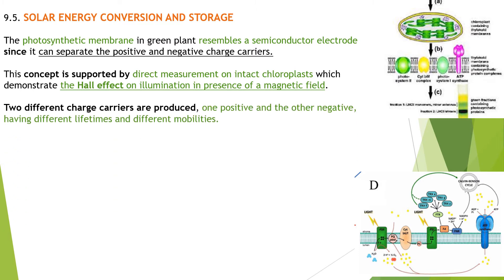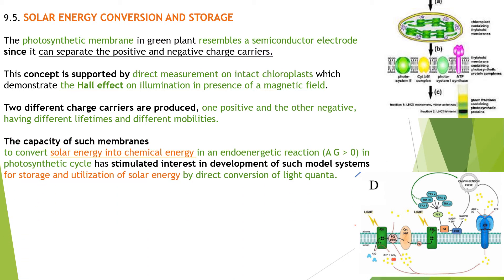The Hall effect is the measurement of intact chloroplasts in presence of the magnetic field. In that experiment, you observe that two charge carriers are produced, one positive and one negative, with different lifetimes and mobilities. The capacity of such membranes to convert solar energy into chemical energy is an endoergetic reaction. This has stimulated interest in development of model systems for storage and utilization of solar energy.